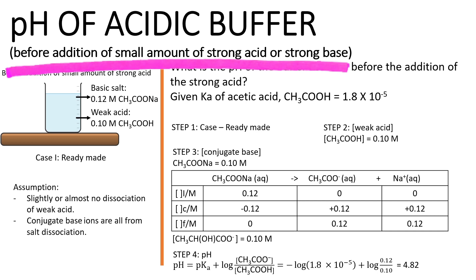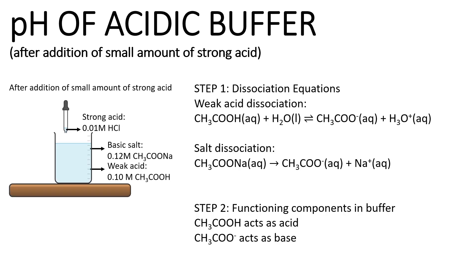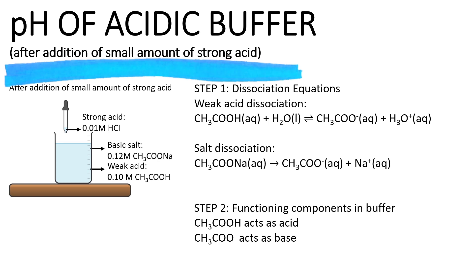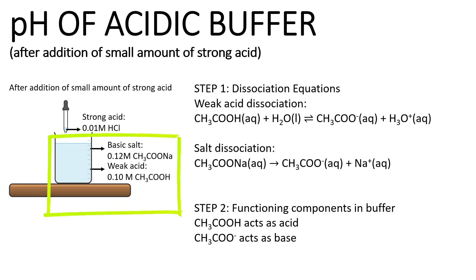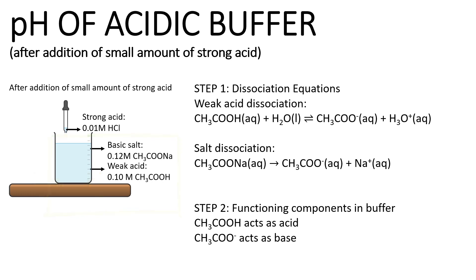In this video, I will move on to teach you how to determine the pH of an acidic buffer solution after the additions of small amounts of strong acid or small amounts of strong base. The components inside an acidic buffer solution are important to help the acidic buffer system maintain the pH after additions of small amounts of strong acid or strong base. I'm going to use the acetic acid–sodium acetate buffer system to explain how the buffer maintains pH upon additions of small amounts of strong acid.